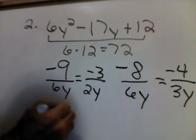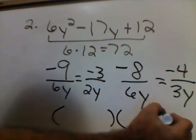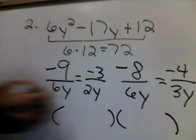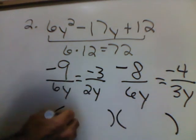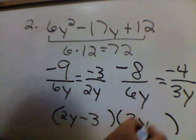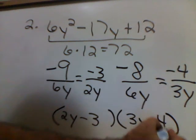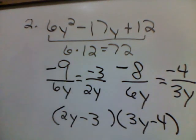Y'all, that's all I need for my final answer. Come down, make my parenthesis. I get a 2y minus 3, and I get a 3y minus 4. Final answer.